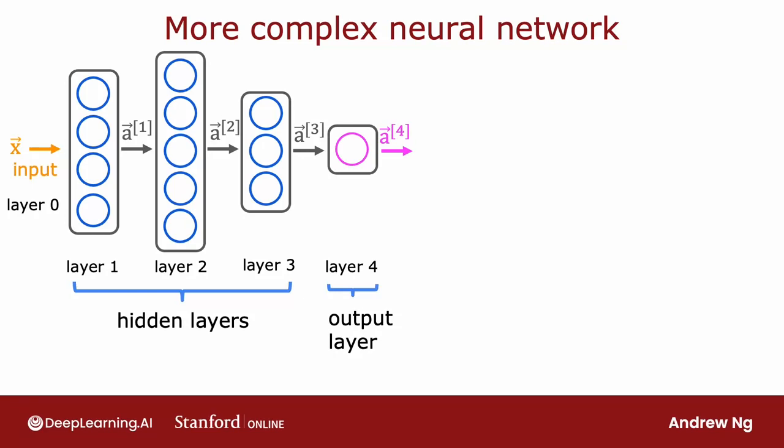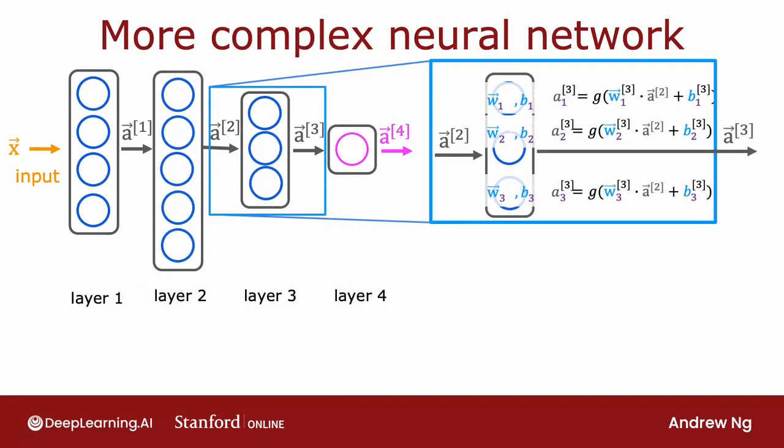Let's zoom in to layer three, which is the third and final hidden layer, to look at the computations of that layer. Layer three inputs a vector a superscript square bracket two that was computed by the previous layer, and it outputs a three, which is another vector. So what is the computation that layer three does in order to go from a two to a three?